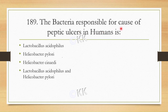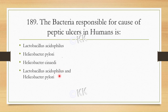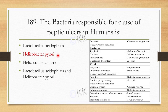Next question: The bacteria responsible for causing peptic ulcer in humans is: Option A: Lactobacillus acidophilus. Option B: Helicobacter pylori. Option C: Helicobacter AD. Option D: Both Lactobacillus acidophilus and Helicobacter pylori. The correct option is Helicobacter pylori. Lactobacillus acidophilus is found in the vagina, while Helicobacter pylori can cause peptic ulcer.